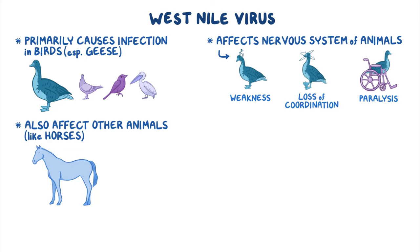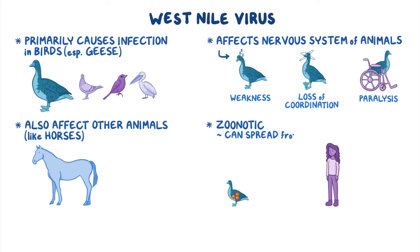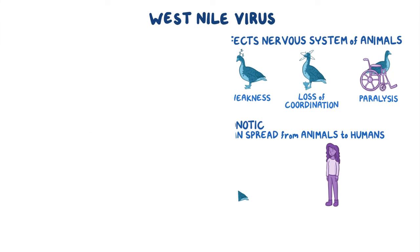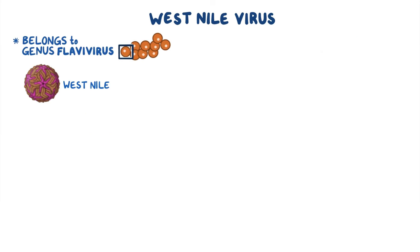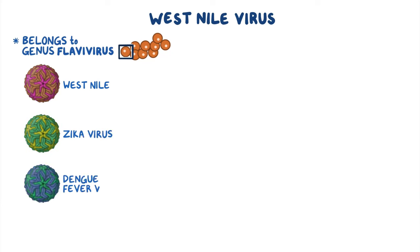West Nile virus is a zoonotic virus, which means that it can spread from animals to humans. The West Nile virus belongs to the genus Flavivirus, along with a few other viruses like the Zika virus and dengue fever virus.